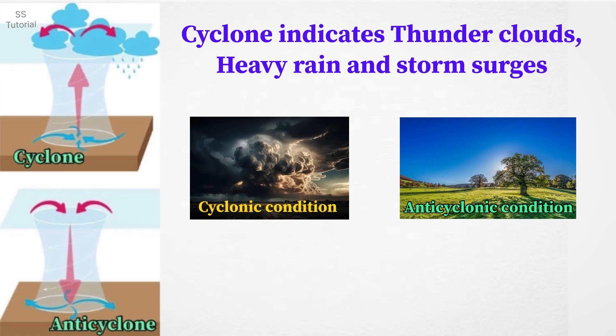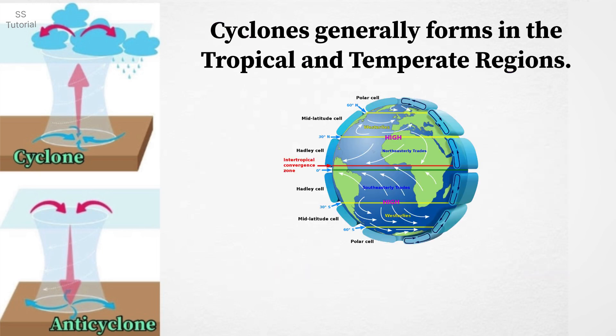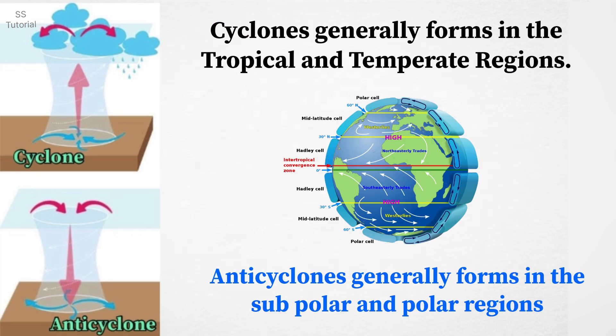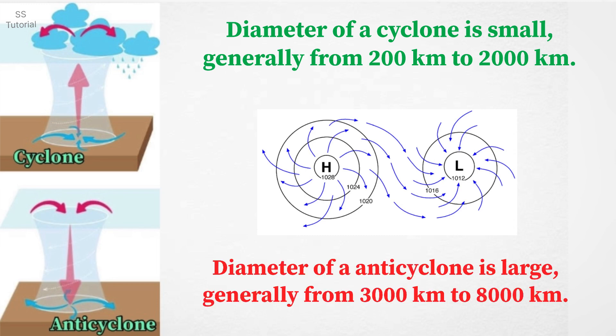Cyclone indicates thunder cloud, heavy rainfall and strong winds, whereas anticyclone indicates clear sky. Generally cyclone forms in the tropical and temperate region, whereas anticyclone forms in the subpolar and polar region. Diameter of a cyclone is comparatively smaller, generally from 200 km to 2000 km, whereas diameter of an anticyclone is larger, generally 3000 to 8000 km.